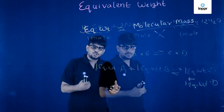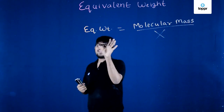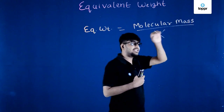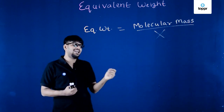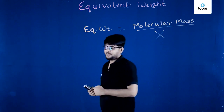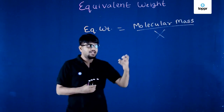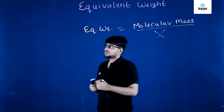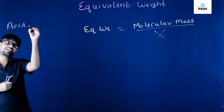That is what we are going to learn today — how to define and find equivalent weight. The equivalent weight of any chemical in the universe is simply given by: molecular mass divided by X. Now, what is this X? It's a special number that varies for every element and every molecule.